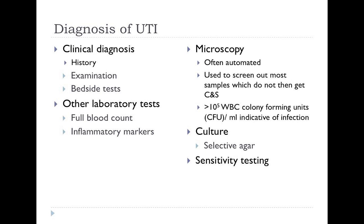Most laboratories now automate the microscopy, which is a good thing because a typical lab receives somewhere between 150,000 and 200,000 urines a year. The automated machinery is used to screen out most samples — if there are no red cells and no white cells, the urine will not get cultured unless it comes from a specific subset of patients at greater risk, such as those who are neutropenic due to cancer treatment, where the absence of white cells doesn't rule out infection.